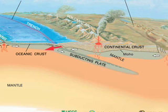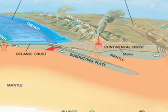The majority of an oceanic lithospheric plate is made out of the upper part of the mantle. So it's the combination of crust plus the underlying relatively cold portion of the mantle that makes up this lithospheric plate.